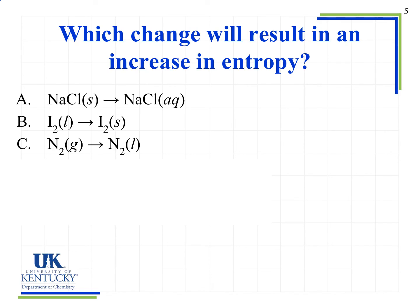Let's look at some examples. Which change will result in an increase in entropy? For NaCl, we see it's in the solid phase and then it goes to the aqueous phase, meaning it's dissolved in water — therefore, this will be an increase in entropy. For B, we see going from a liquid to a solid, so we are going to decrease the entropy because we are increasing the order. Next we see going from a gas to a liquid, and so that is also a decrease in entropy.